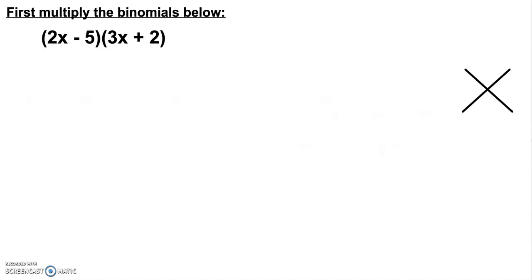Let's remember how to multiply binomials first. If we multiply 2x minus 5 times 3x plus 2, what will that look like?